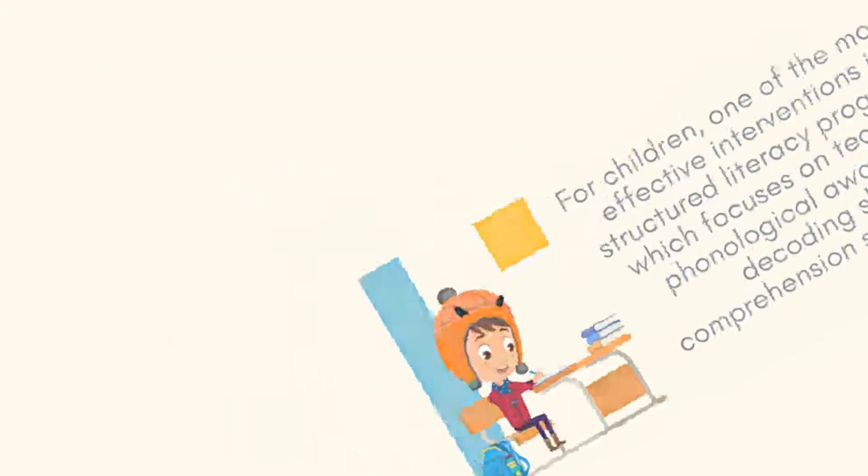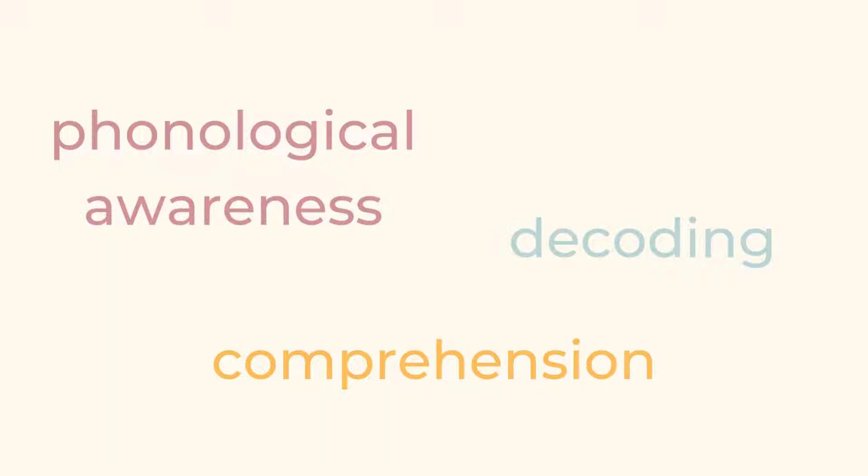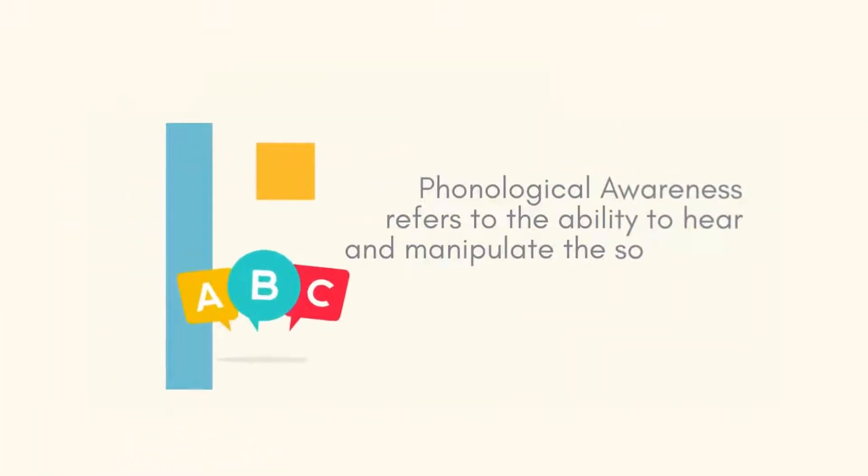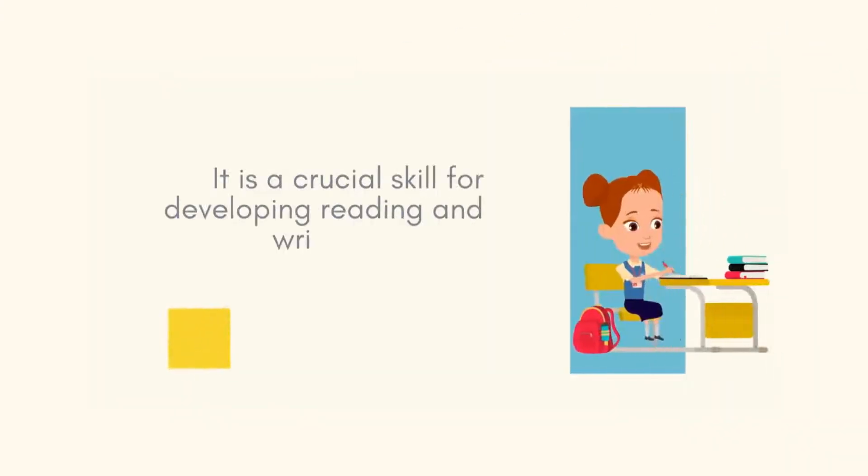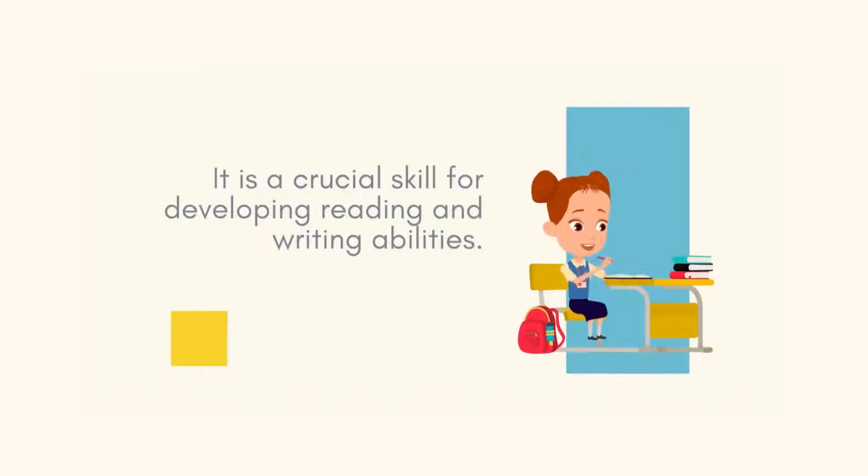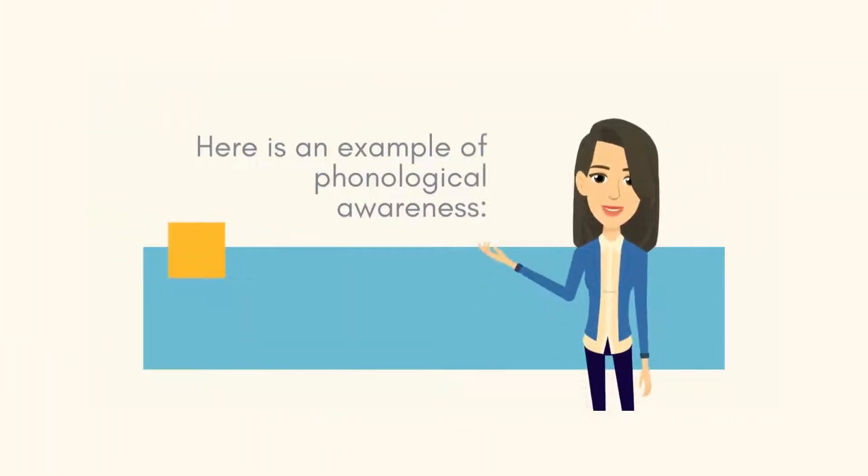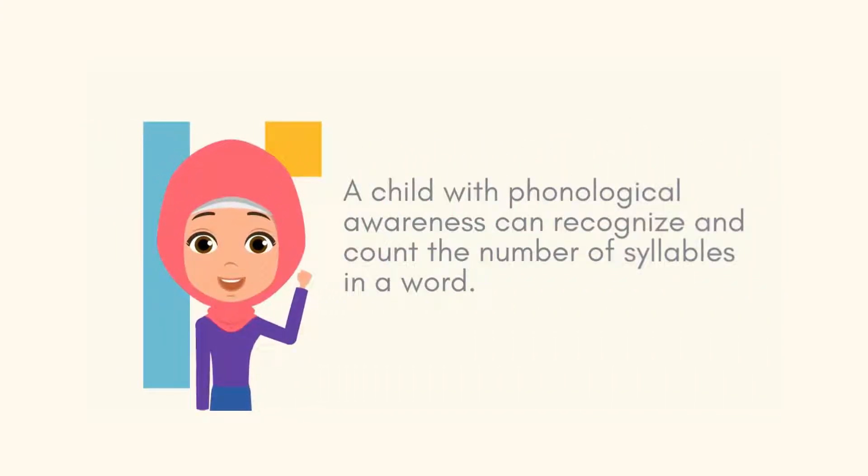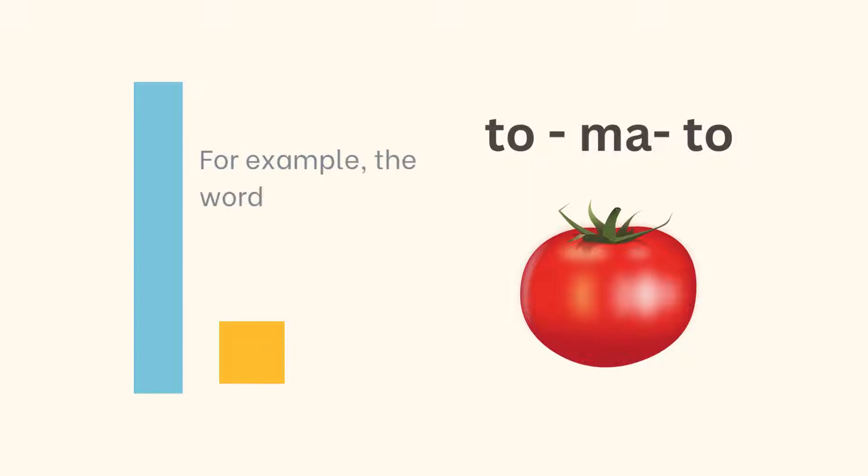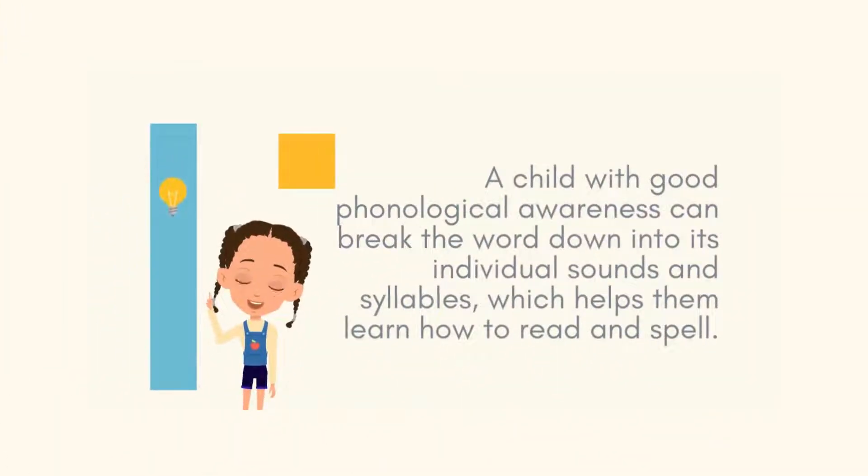Phonological awareness refers to the ability to hear and manipulate the sounds of language. It is a crucial skill for developing reading and writing abilities. Here is an example of phonological awareness: a child with phonological awareness can recognize and count the number of syllables in a word. For example, the word tomato has three syllables: to-ma-to. A child with good phonological awareness can break the word down to its individual sounds and syllables, which helps them learn how to read and spell.